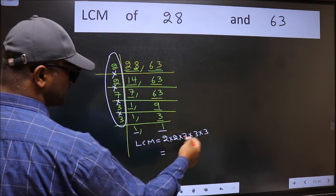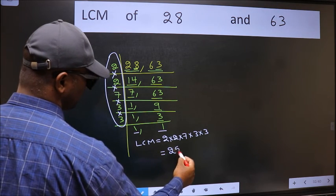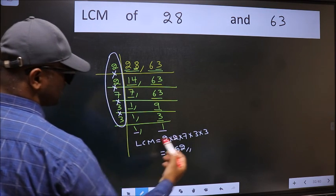When we multiply these numbers, we get 252 is our LCM. So try this carefully.